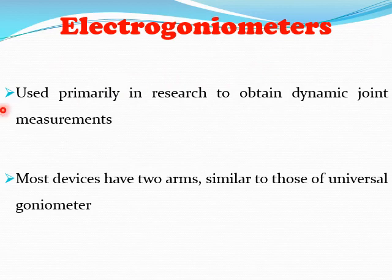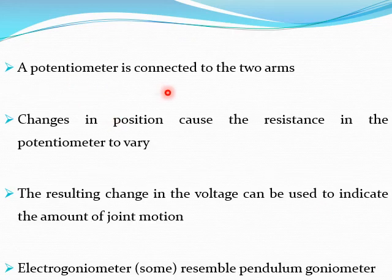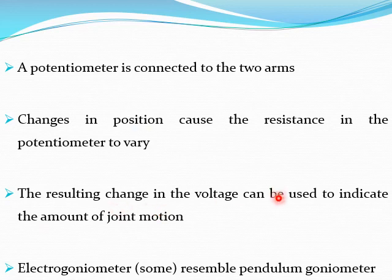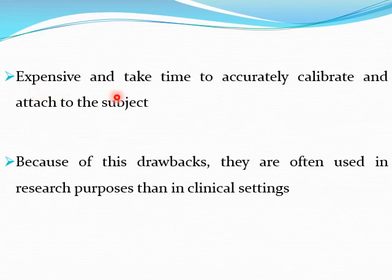Electrogoniometers are used primarily in research to obtain dynamic joint measurements. Most devices have two arms similar to those of the universal goniometer. A potentiometer is connected to the two arms, and changes in position cause the resistance in the potentiometer to vary. The resulting change in voltage can be used to indicate the amount of joint motion. Electrogoniometers are expensive and take time to accurately calibrate and attach to the subject, so they are often used in research settings.